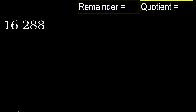288 divided by 16. 2 is less, therefore next. 28 is not less, therefore with 28.